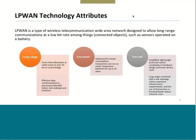LPWAN technology attributes: LPWAN is a type of wireless telecommunication wide-area network designed to allow long-range communication at a low bit rate — very important. The objective is not to transfer large amounts of data like movies. The objective is connected objects for IoT use cases such as battery-operated sensors. The long-range attribute covers a few kilometers in urban areas to over 10 kilometers in rural settings, including effective communication in previously infeasible indoor and underground locations.